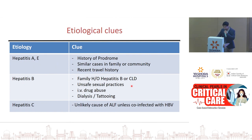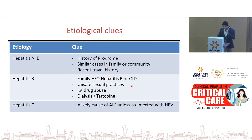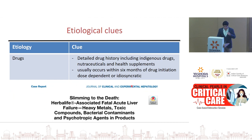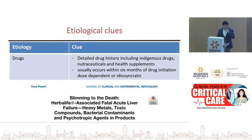There can be etiological clues — important to identify because we have cause-specific treatments in ALF that can reverse the condition. For hepatitis A and E: history of prodrome, similar cases in family or community, recent travel history. For hepatitis B: family history of hepatitis B or CLD, unsafe sexual practices, IV drug abuse, history of dialysis or tattooing. Hepatitis C is unlikely to present as ALF unless co-infected with hepatitis B. For drugs: take every drug history including health supplements and nutraceuticals; injury can occur within six months of introduction — even slimming powders like Herbalife have caused acute liver failure.